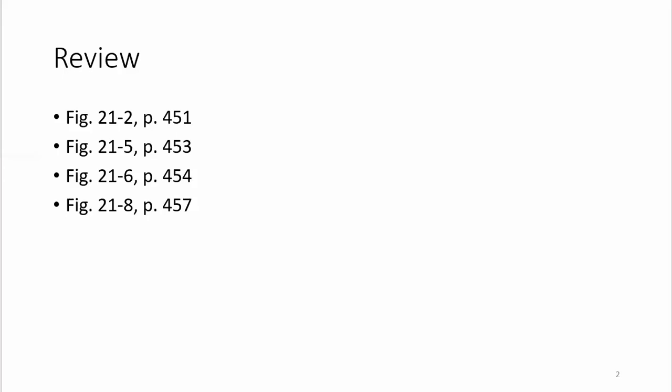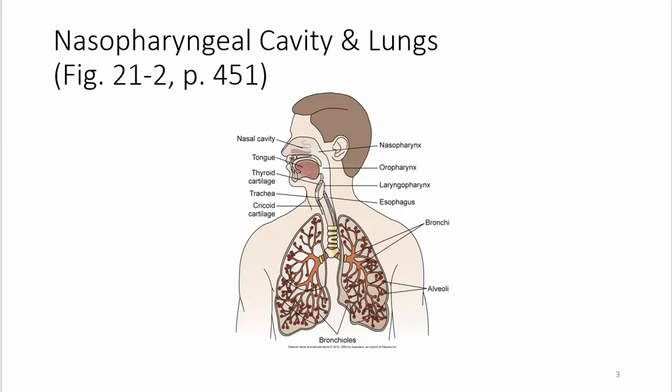The figures are in your textbook, but they're also here. The upper respiratory includes the nasal cavity, the mouth, the nasopharynx, oropharynx, and laryngeal pharynx. Then the trachea and the thyroid cartilages — the Adam's apple — where the epiglottis is.